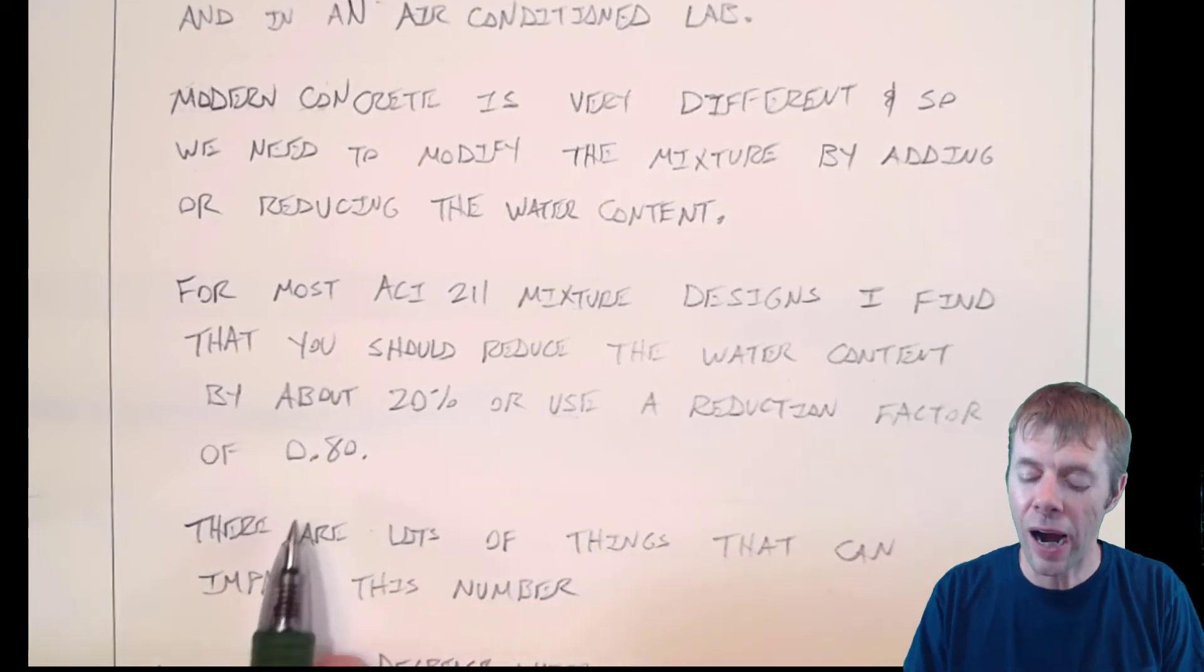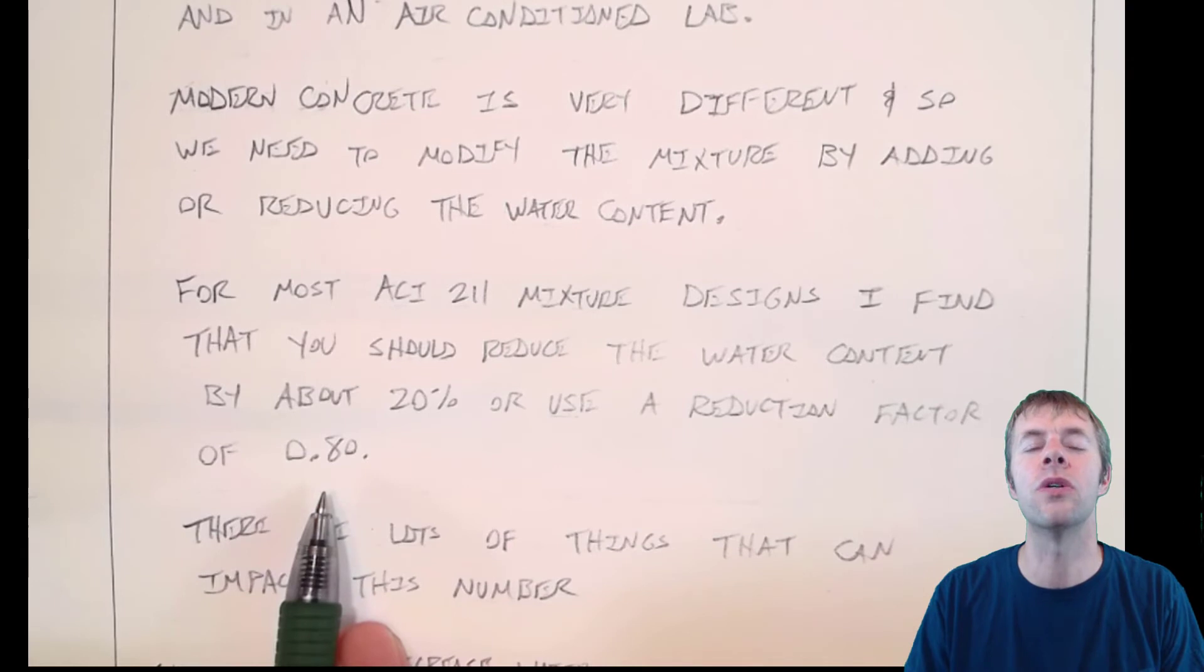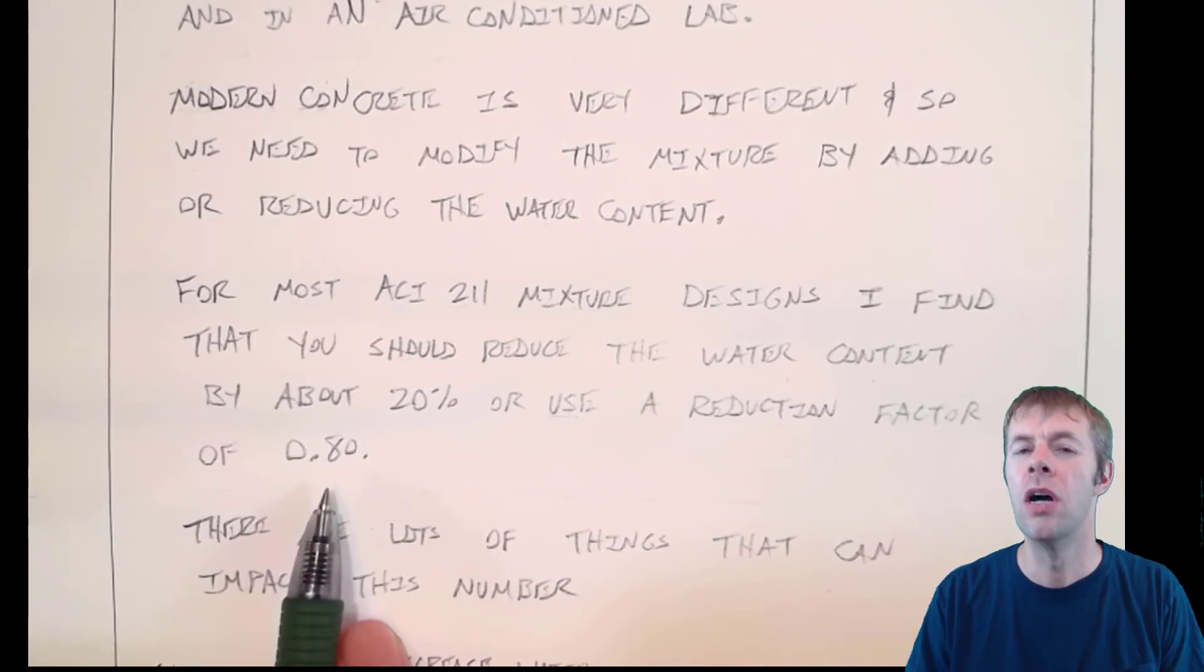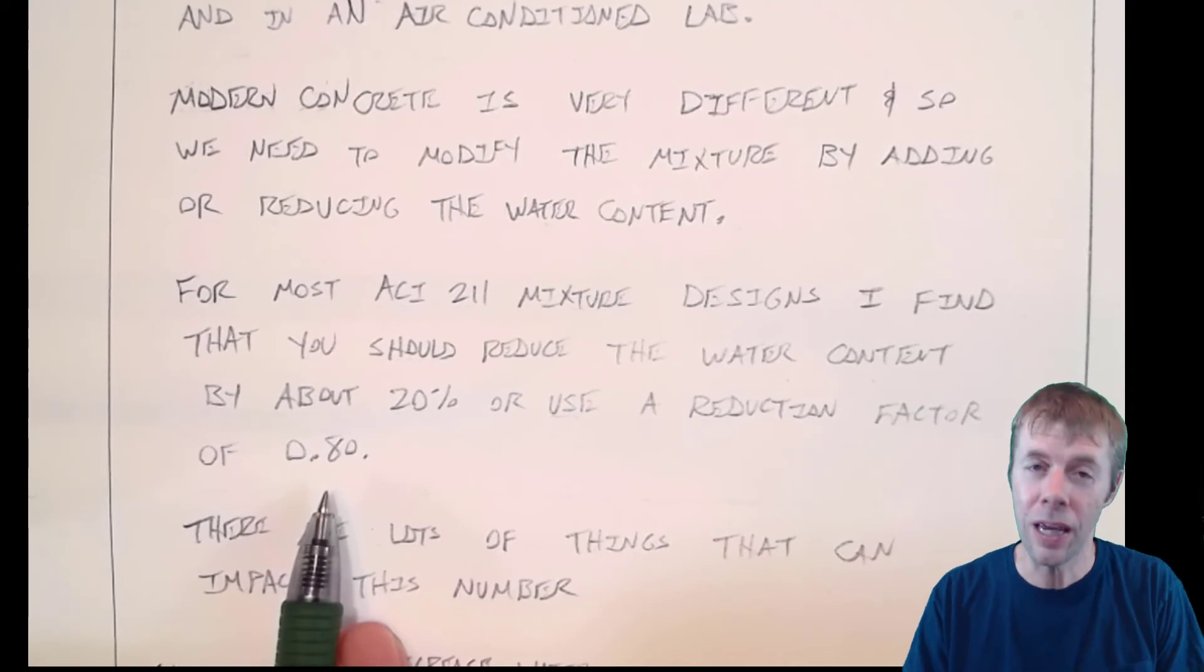And we're gonna use something called a reduction factor. And I wish there was more science to this. I really really wish there was. I wish there's a way you could put in your aggregates or put in your admixtures or put in something else and it would tell you distinctly what the water reduction number is. But I'm sorry we don't have that. We can't do that right now.